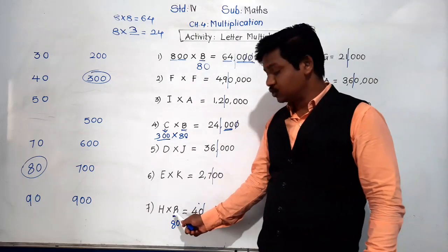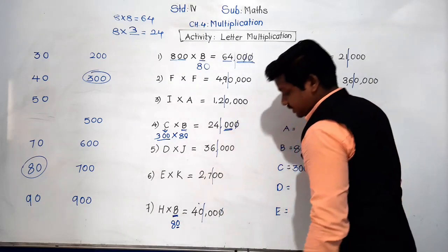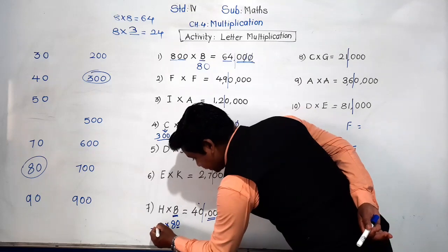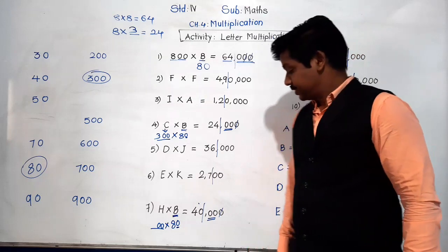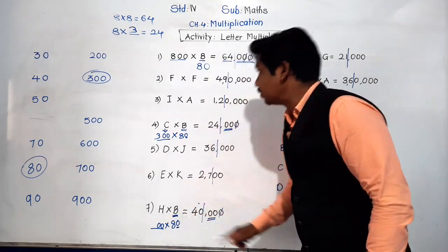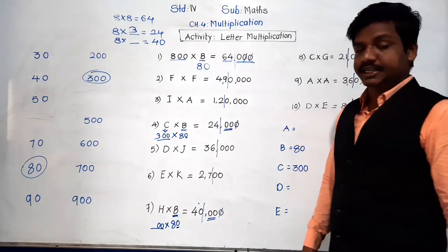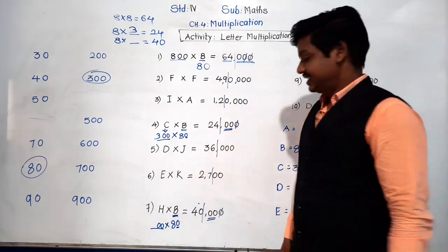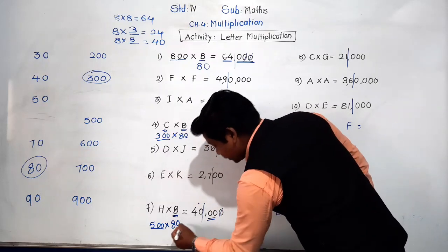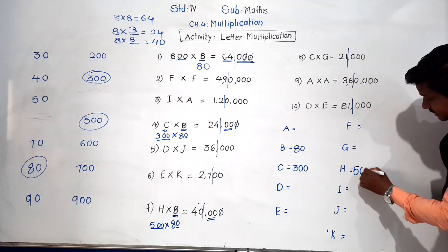Now let's find the seventh equation, H × B. We know B = 80. In 80 there is one zero. In the answer there are three zeros total; one zero comes from 80, leaving two zeros remaining. So the number representing H must have two zeros. Now 8 × ? = 40 — from the 8 times table, 8 fives are 40. So the digit is 5, and with two zeros, H represents 500.